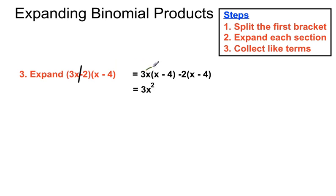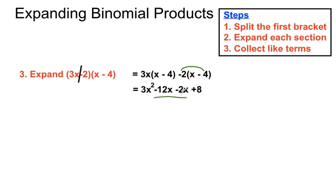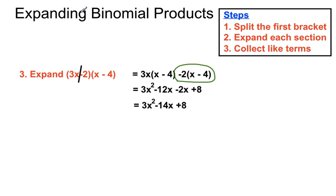3x squared is gained by doing 3x times x. Then 3x multiplied by minus 4 makes minus 12x. For the second part, minus 2 times x gives minus 2x. Here's where a lot of students go wrong: we have a minus times a minus. Minus 2 times minus 4 is a positive 8. Looking for like terms, we have minus 12x and we're subtracting 2x more, so minus 12 minus another 2 gives us minus 14x plus 8. When you've got a minus number in front of a bracket, just be careful with the signs — you can even check that on your calculator to be sure.